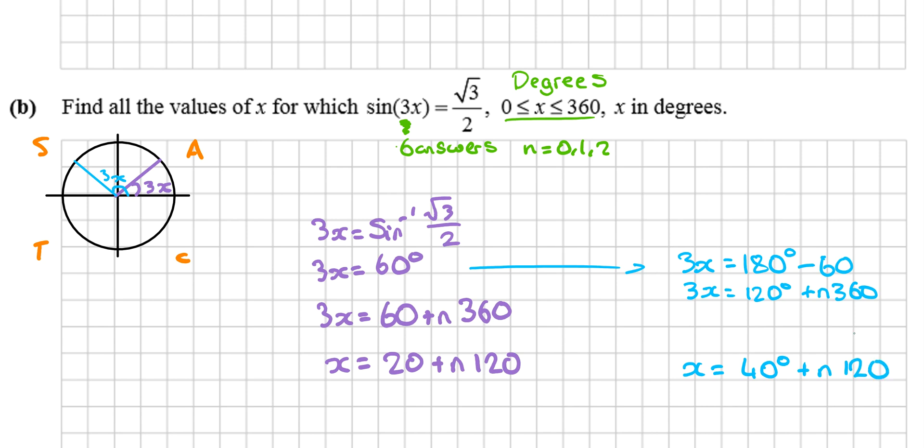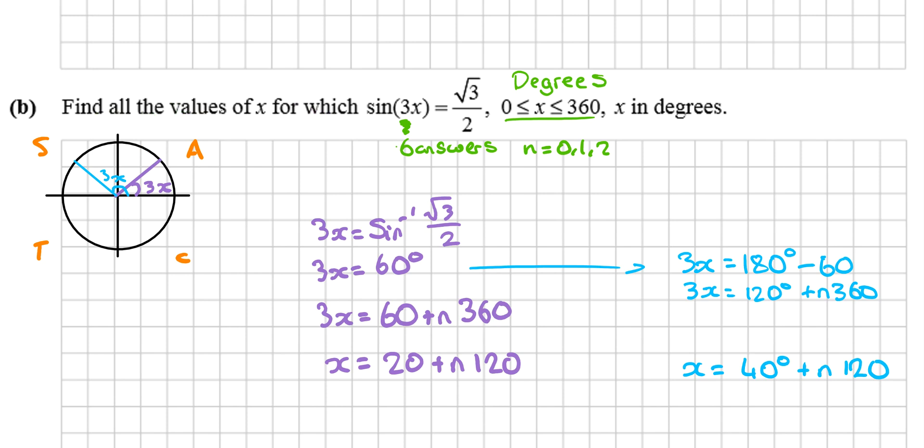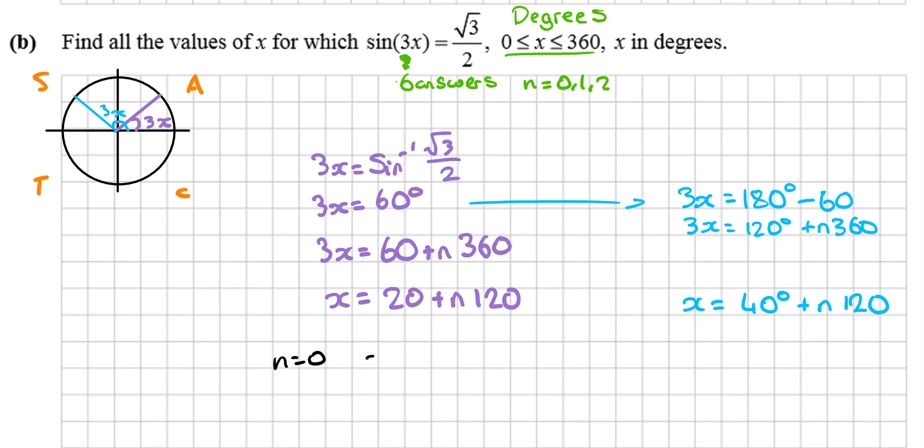And now I use—well, how many answers do I want? I want six answers, and I'm going to use n equals 0, 1, and 2. n equals 0: x equals 20 degrees, x equals 40 degrees.